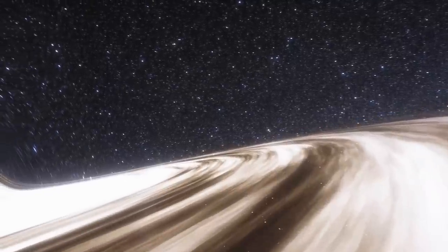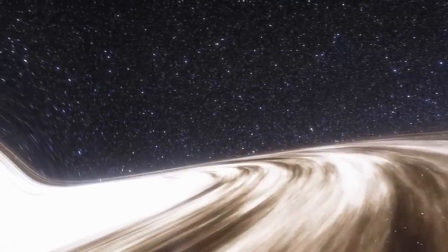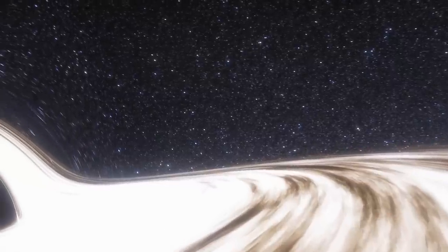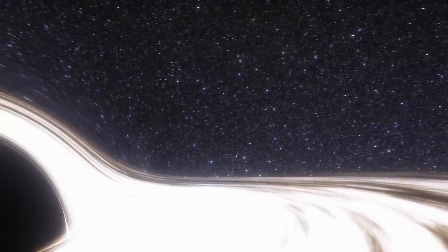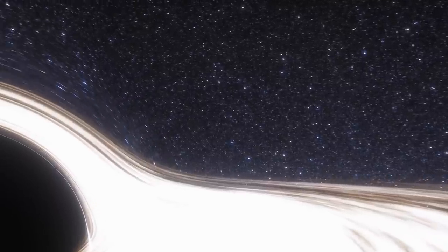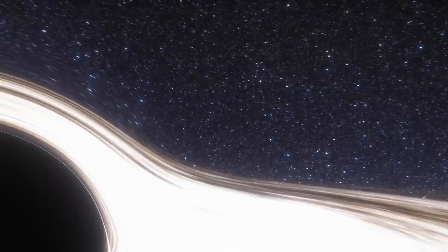Scientists have found proof that every large galaxy contains a supermassive black hole at its centre. The supermassive black hole at the centre of the Milky Way is called Sagittarius A. It has a mass equal to about four million suns.